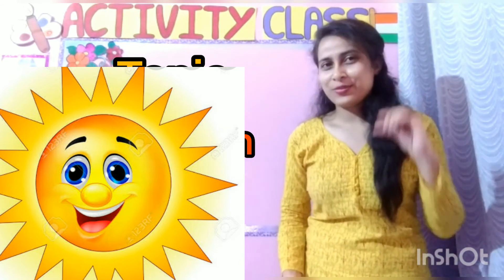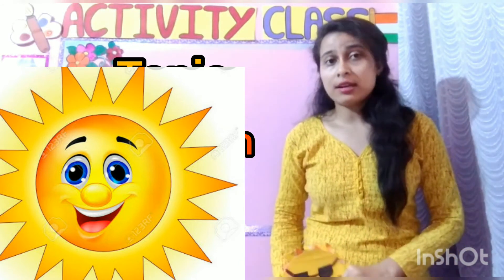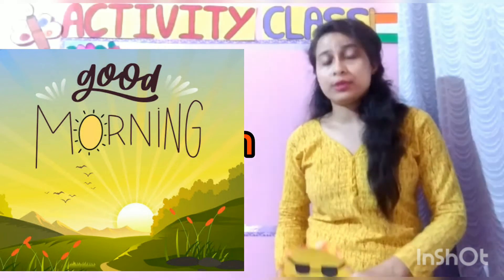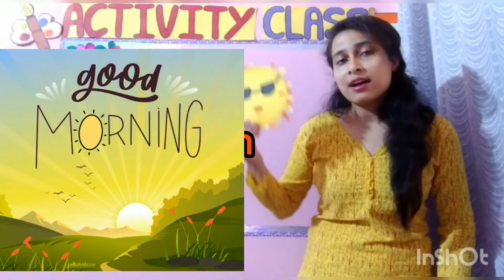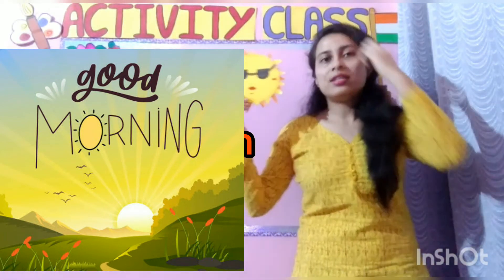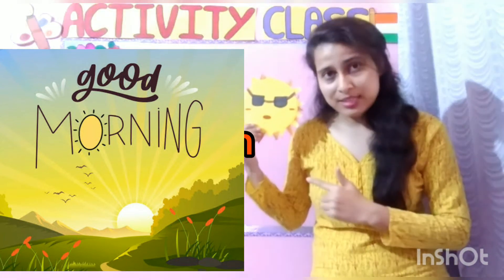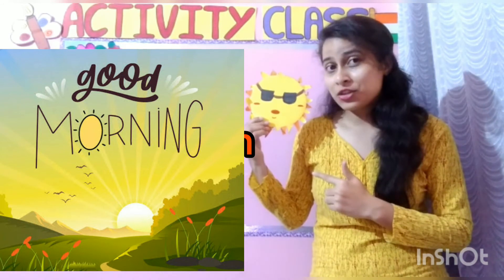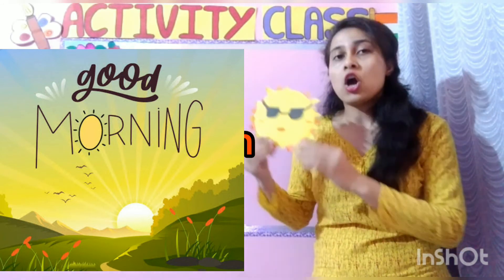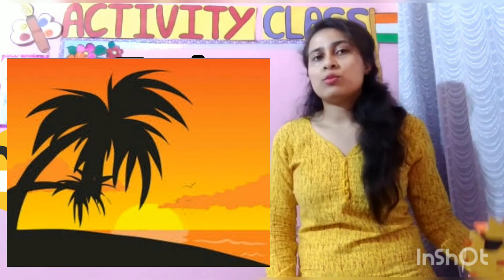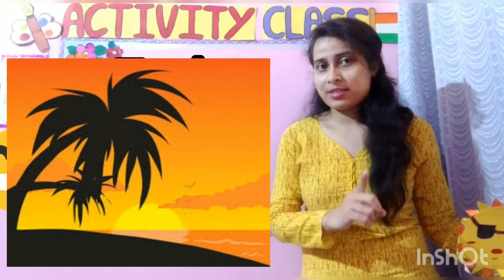अब आपके लिए एक छोटा सा homework है — आपको notice करना है, सुबह morning में जल्दी उठके, कि sun कहां से rise हो रहा है. जिस direction से वो rise हो रहा होगा, उस direction को हम कहेंगे east. और evening में भी आपको notice करना है कि sun कहां से set हो रहा है, यानि कि कहां पे ढल रहा है. तो जिस direction से वो ढलेगा, उसको बोलेंगे हम west.